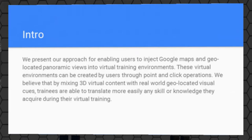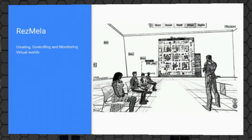At this point I need to introduce the Resmila system. It's an application that provides three functionalities: it allows you to create large-scale virtual scenes, it allows you to control what happens in that environment from a control room kind of setting, and you can monitor what's happening in the virtual environment. Those are the three main functionalities.